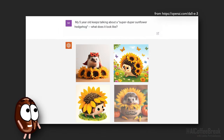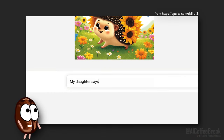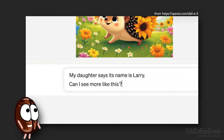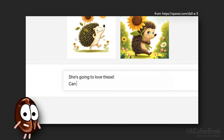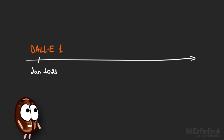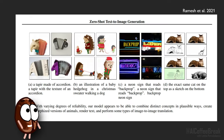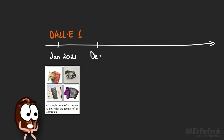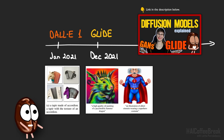DALL-E 3 is out. It is a diffusion model that you can use as a ChatGPT Plus user and through Bing Chat. Here is a short timeline of how OpenAI progressed image generation since 2021. January 2021, OpenAI released DALL-E 1, which generated images with an autoregressive transformer, basically from top to bottom. The pictures look good but were small resolution, without many details, and also a bit blurry.